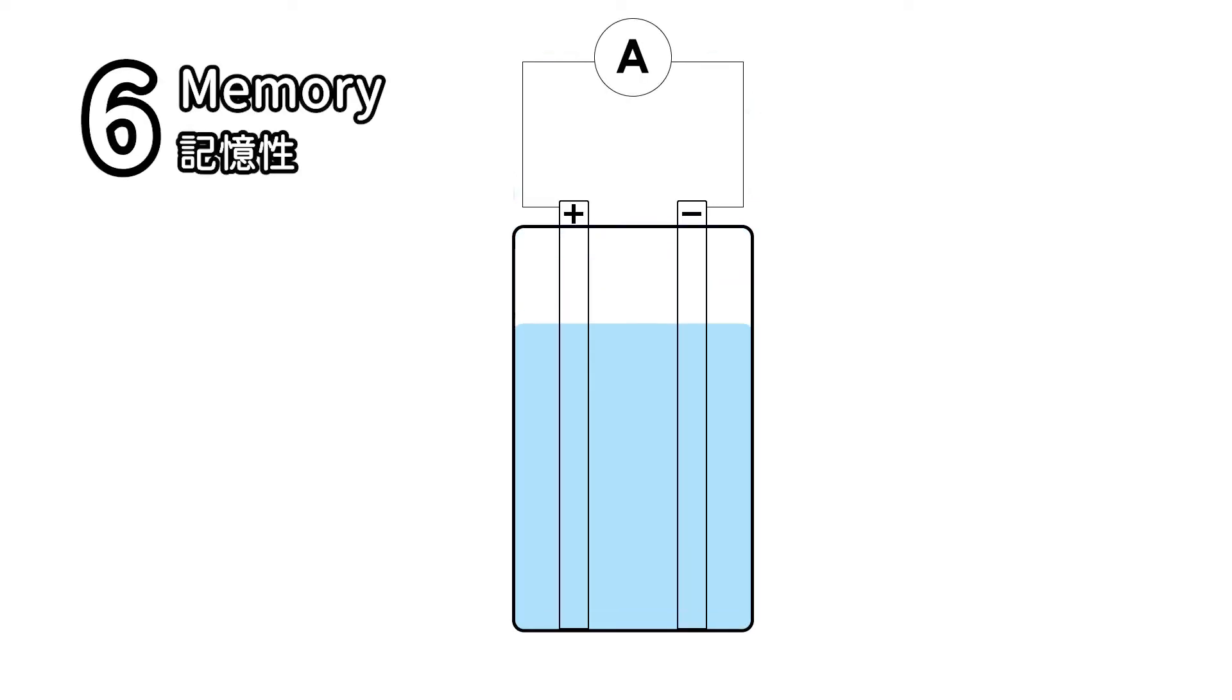6. Memory effect. When the battery is not fully charged and discharged, crystals are gradually produced which hinder the chemical reaction of the positive and negative electrodes. As a result, the energy density is reduced, and the capacity of the battery will be reduced accordingly.